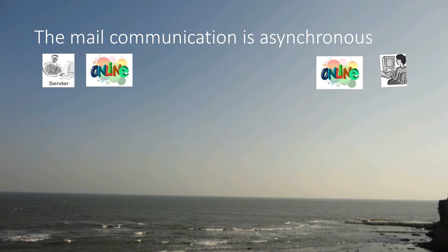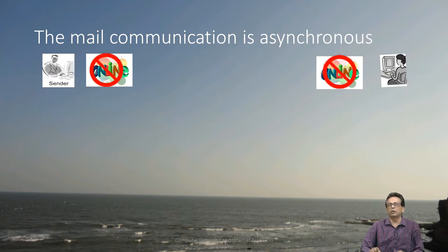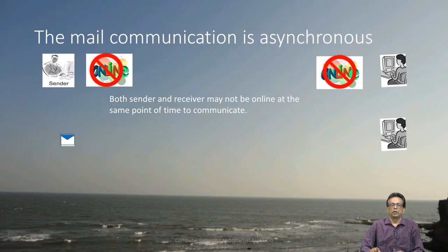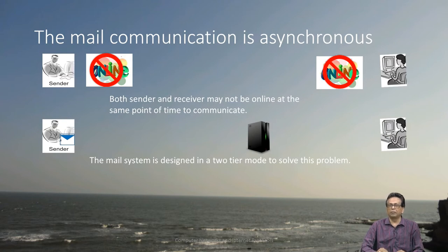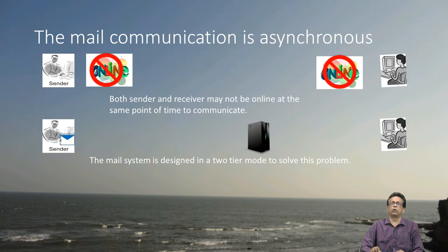The other critical thing is that mail communication is asynchronous. The reason is that the sender and the receiver may not be online at the same point in time, and that is why there is an intermediary involved in the mailing process. The sender or the receiver may not be online at the same point of time, but the intermediary is always online.